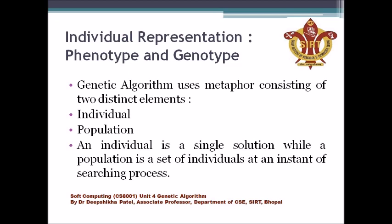When we start the genetic algorithm, the first step is to initialize the population. If there are multiple solutions, we take the best or fittest solutions. We proceed with those possible solutions through the genetic algorithm. As many solutions as are in the population, we proceed with all of them.